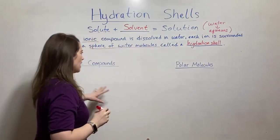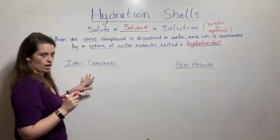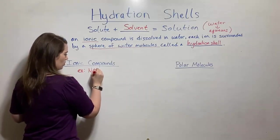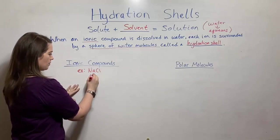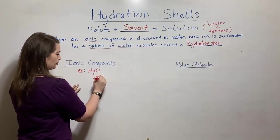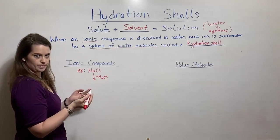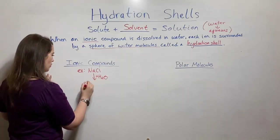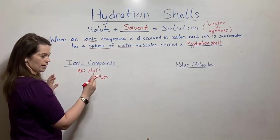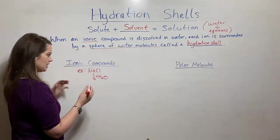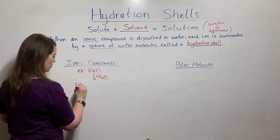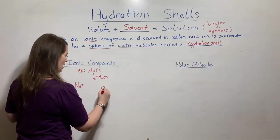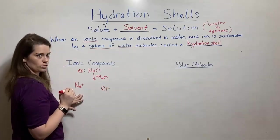So what does this look like? I'm going to draw an example for ionic compounds using the basic example of sodium chloride. When you put sodium chloride into water, it dissolves. How does it do that? Well, it's because of these hydration shells. First, sodium chloride dissociates or ionizes — that means that it forms its ions: a positively charged sodium ion and a negatively charged chloride ion.